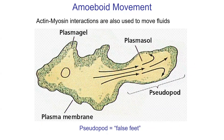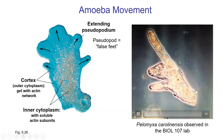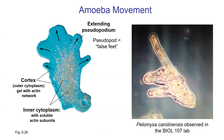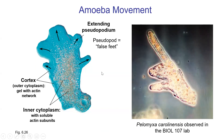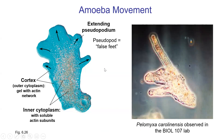Amoebas move by amoeboid motion. The plasma gel is loaded with actin, which can form and unform fibers, pushing out projections called pseudopods — 'pseudo' meaning false and 'pod' meaning feet. This is how amoebas move. I have a video I took in the lab showing an amoeba crawling along by basically changing the shape of its cytoplasm.